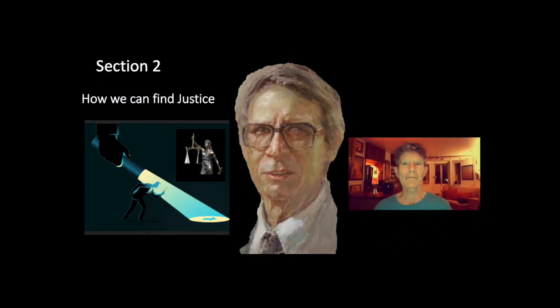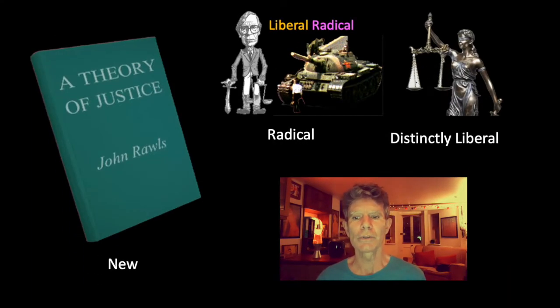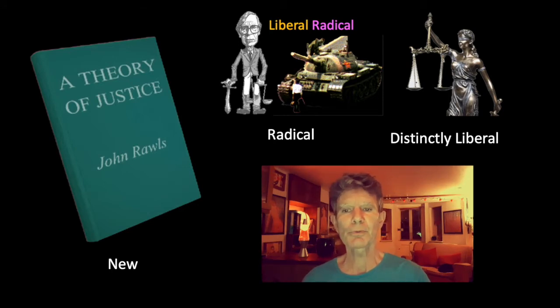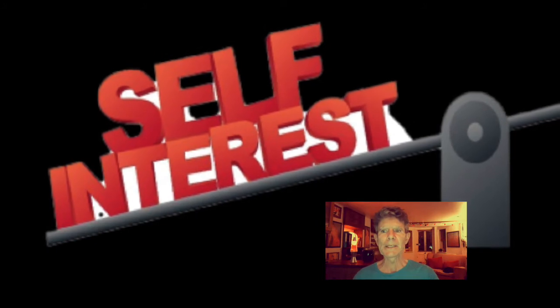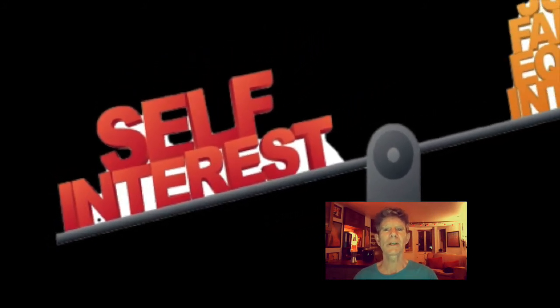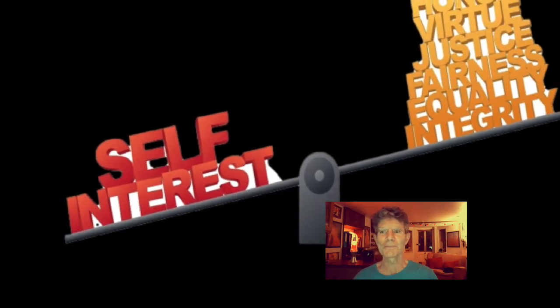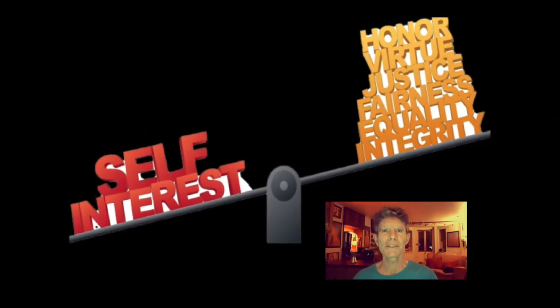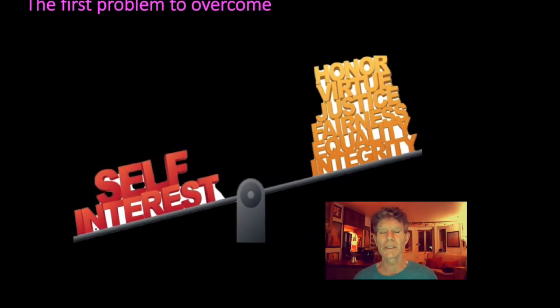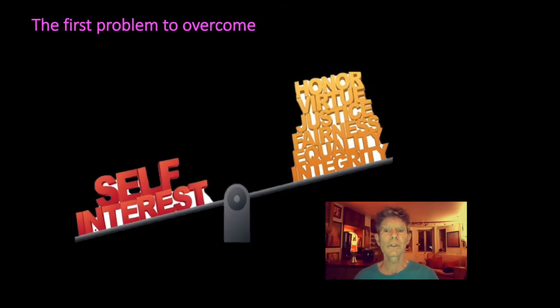Turning now to section two: having identified injustice, Rawls looks for a method to find the principles of justice. This is all set out in A Theory of Justice in 1971, and this is his big contribution to liberal thought — a new, radical, and distinctly liberal theory of justice. He says the first problem to be overcome in any theory of justice is the way that self-interest prevents us from thinking objectively about justice, because those who benefit from current injustice are simply unable to think objectively. Those of us that are privileged are blinded by our own self-interest.